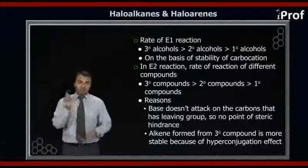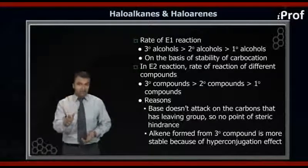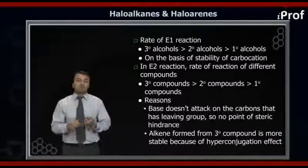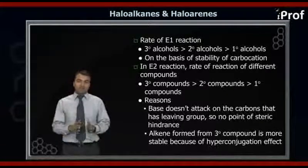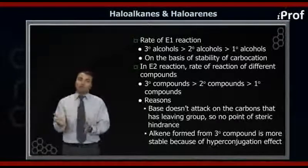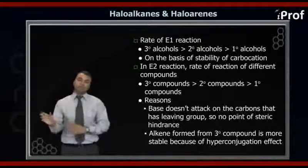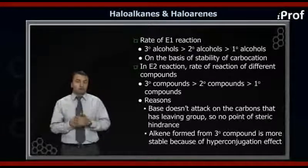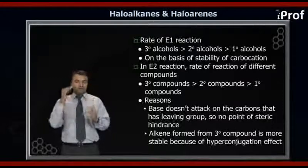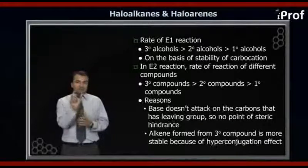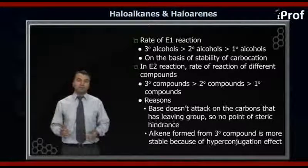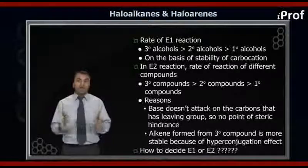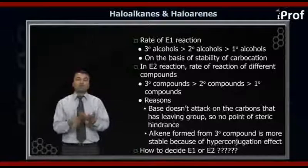The reason the 3° alcohol undergoes fastest in E2 is because a 3° alcohol will form a more stable alkene, based on the number of hyperconjugated structures, which we have already seen in general organic chemistry (GOC). That is why in the E2 mechanism also, the order is 3° > 2° > 1°. But again, you might have a question: E1 also shows 3° > 2° > 1°, and E2 also shows 3° > 2° > 1°. How will you decide that a particular reactant will undergo E1 mechanism or E2 mechanism?